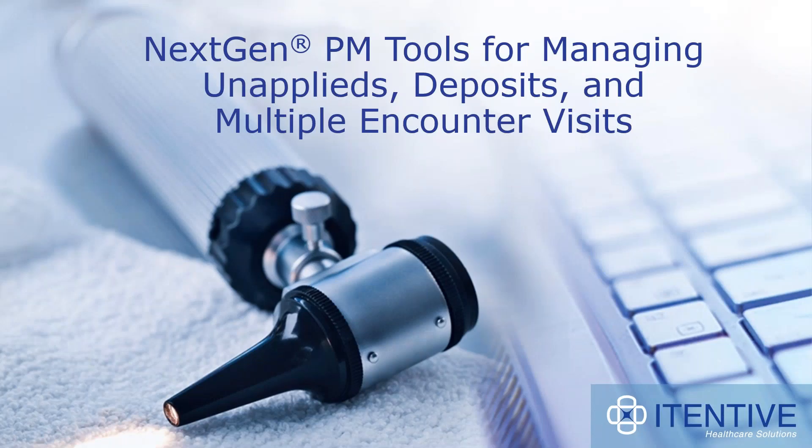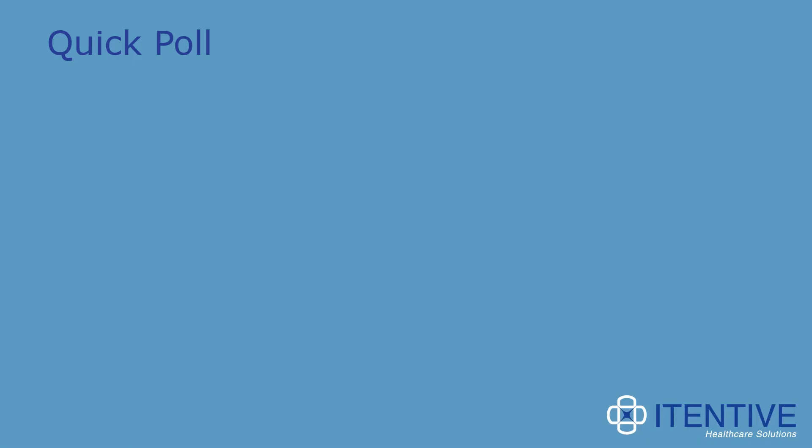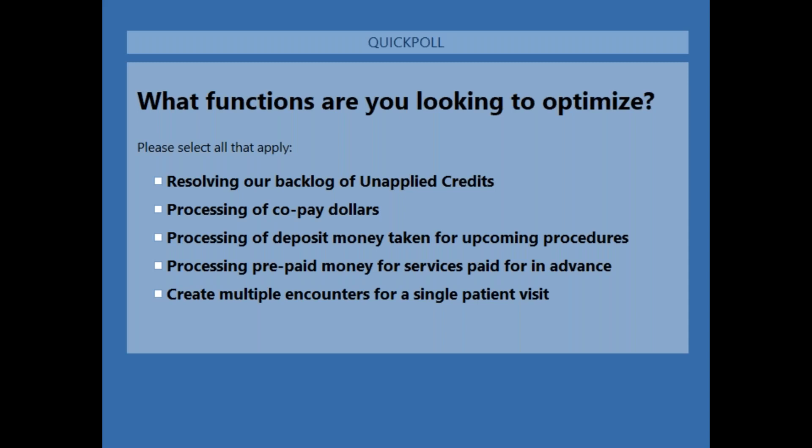Let's get started today with a quick poll. If everybody will take a quick look at their screen and quickly answer: what functions are you looking to optimize? Are you trying to resolve a backlog of unapplied credits, process copaid dollars, processing of deposit money taken for unapplied procedures, processing of prepaid money for services paid in advance, or create multiple encounters for a single patient visit?